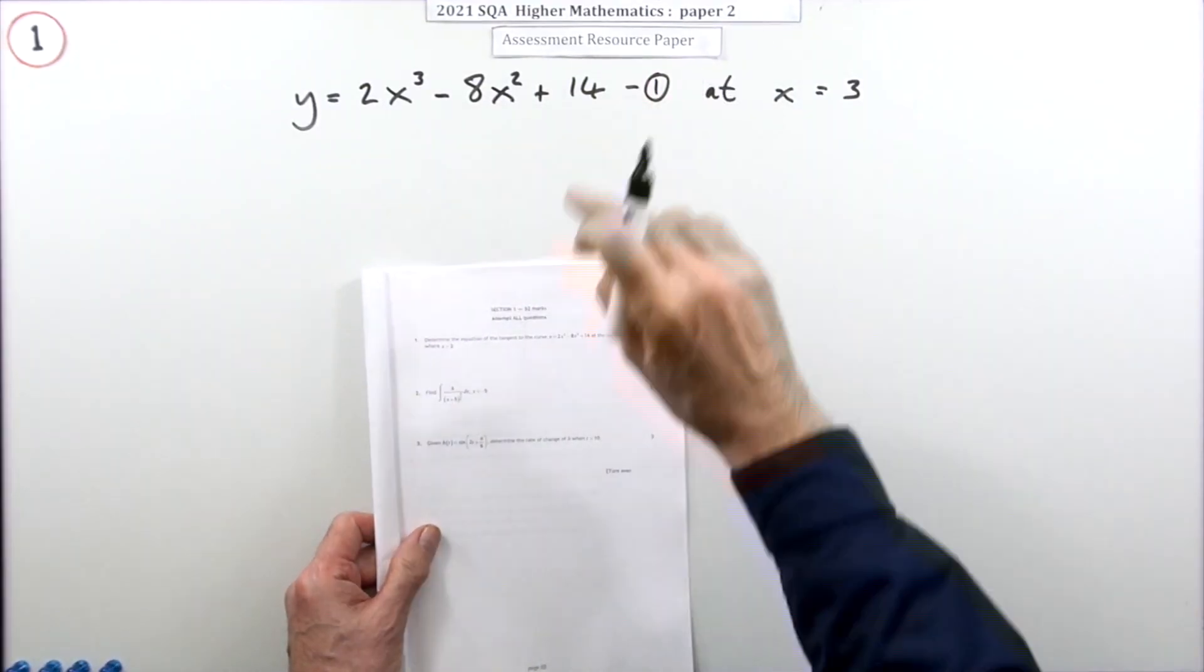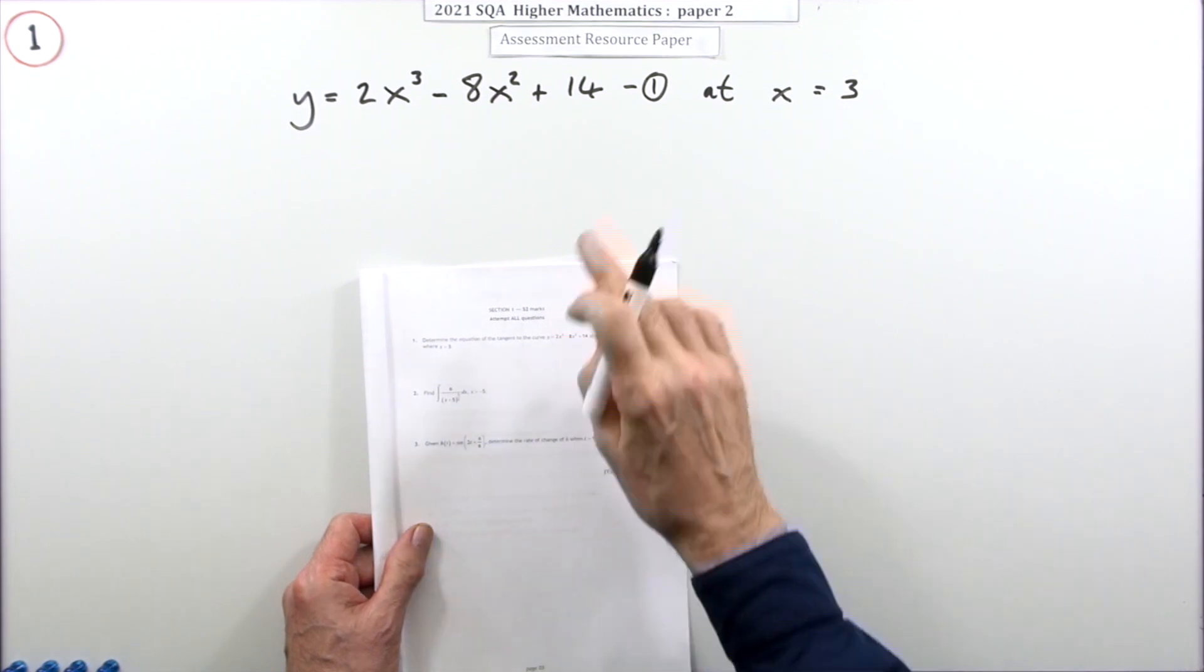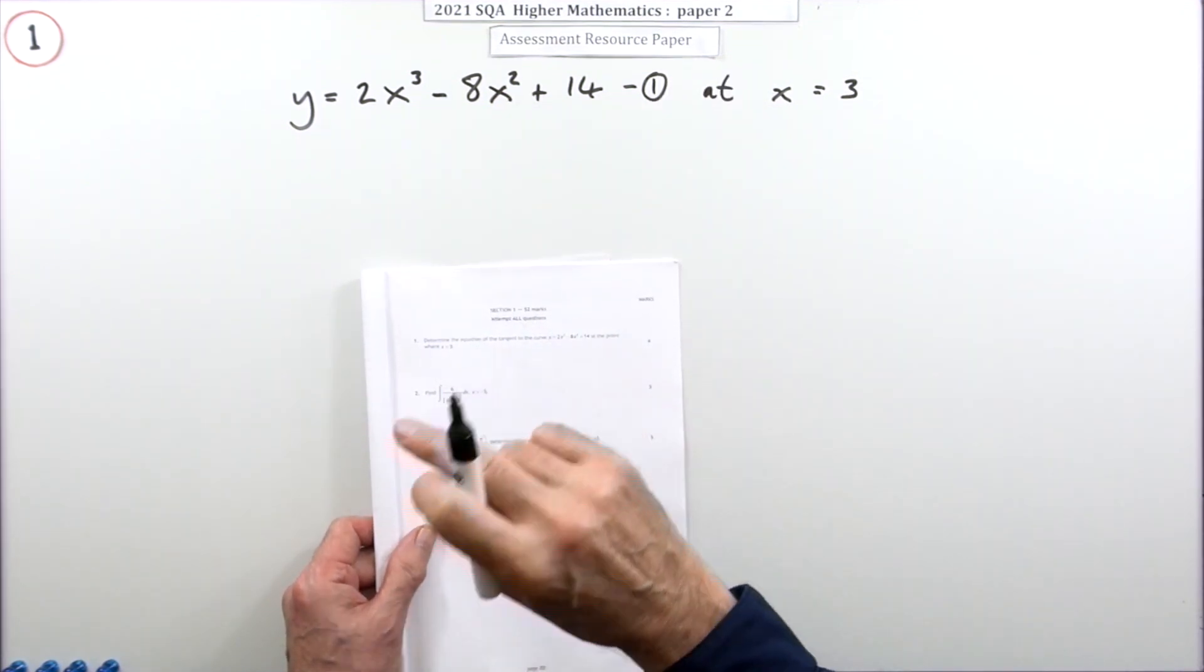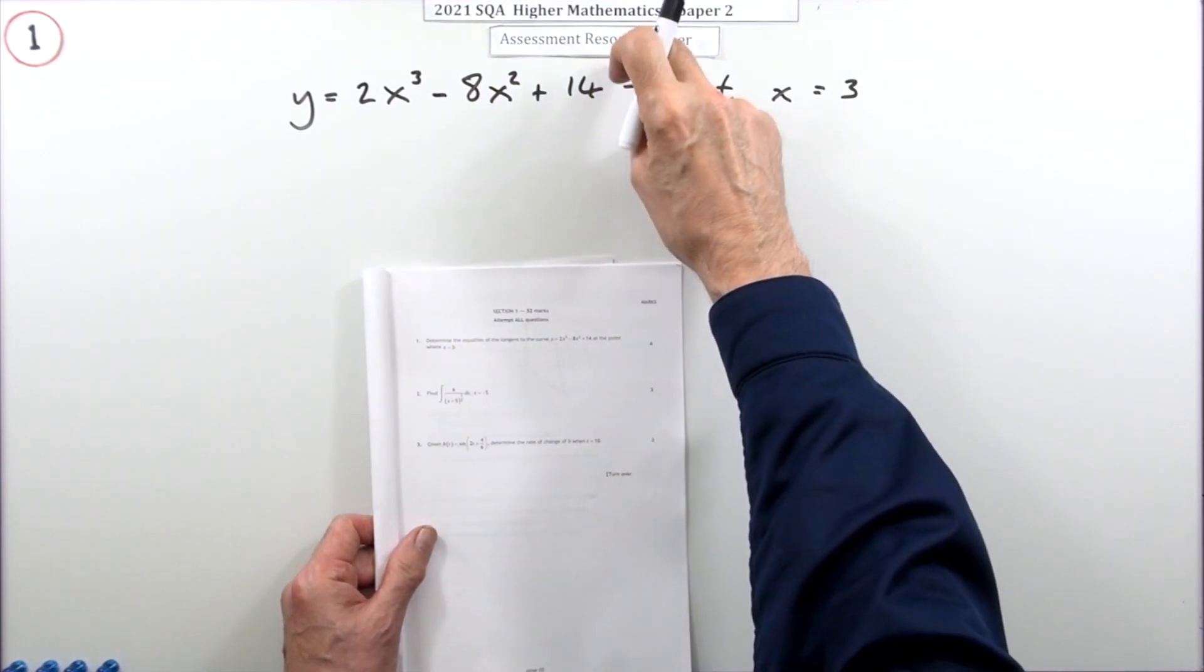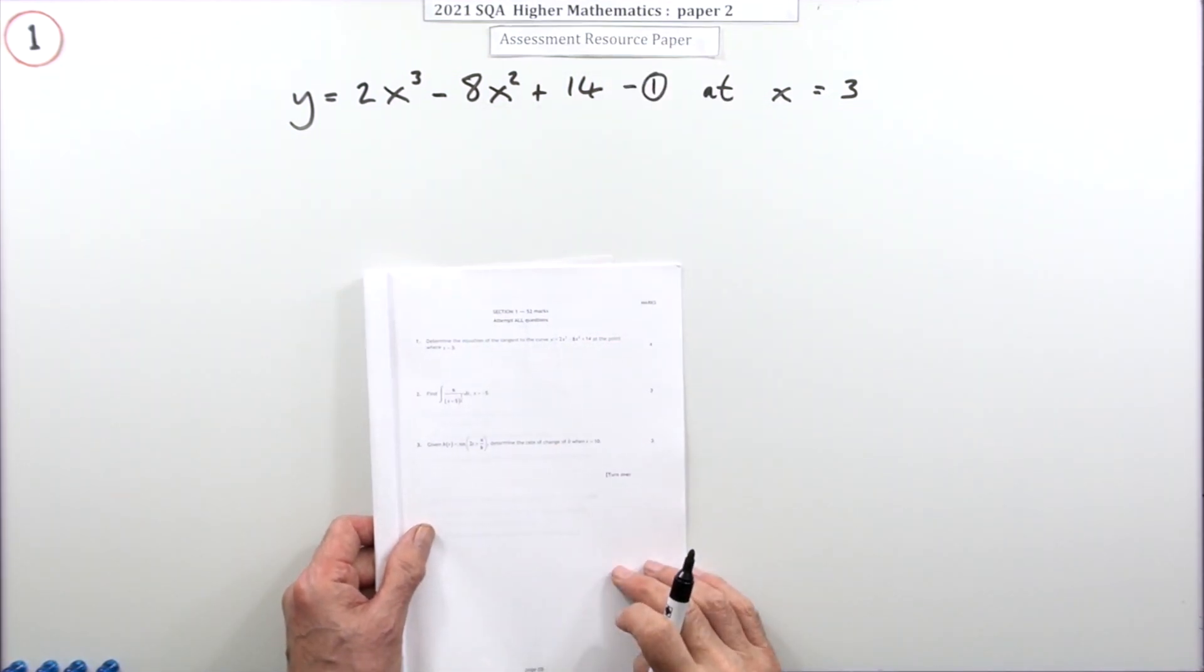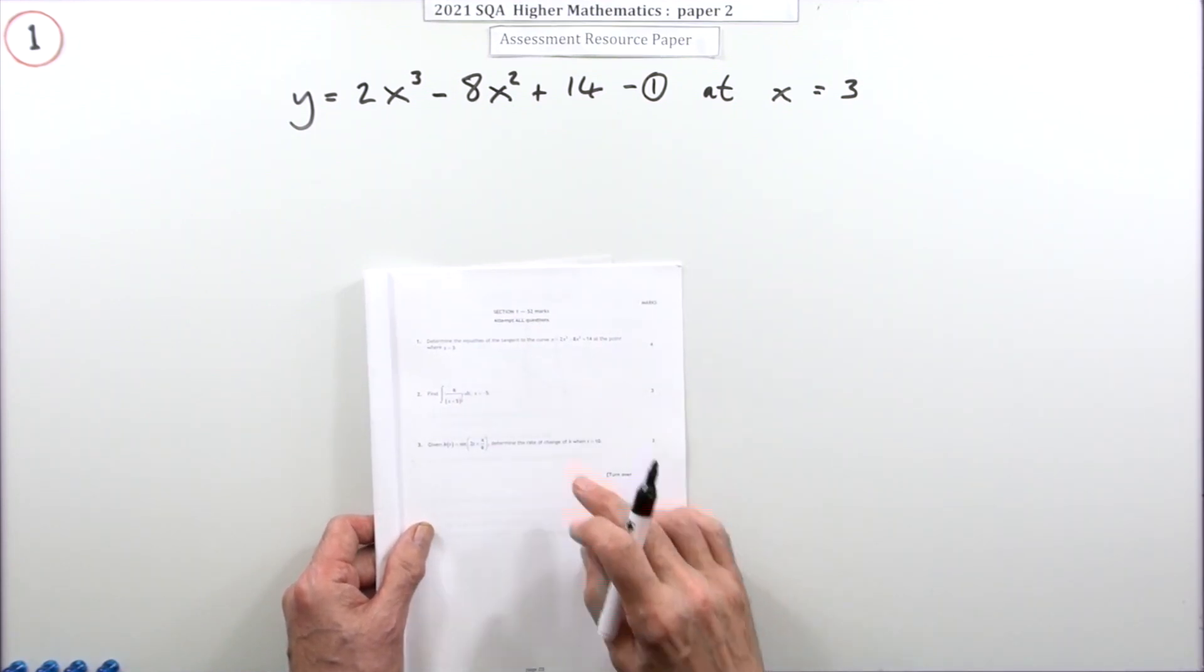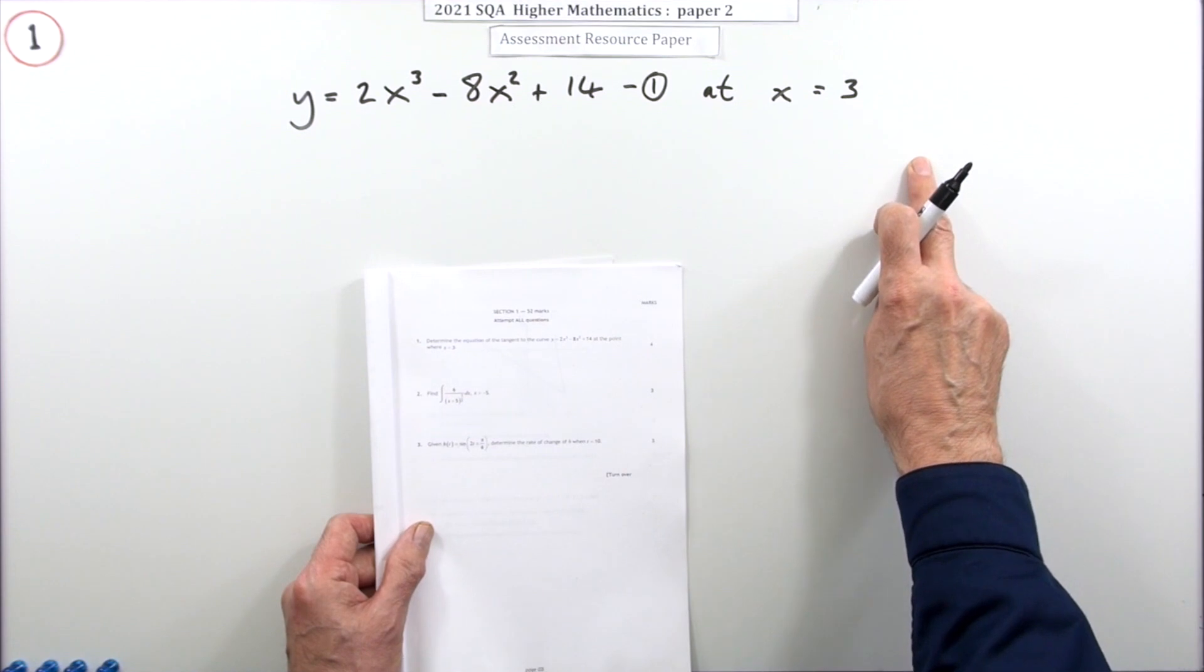So question one then, the first question in paper two of the 2021 Higher Maths. This is just a resource paper and looking at the questions now, it does seem just like a resource of questions rather than proper exam questions because they're all fairly straightforward. This first one is a really straightforward question.